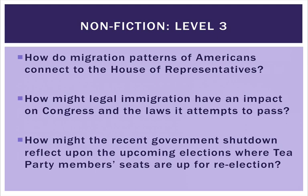In a nonfiction text, level three questions might be something like: 'How do migration patterns of Americans connect to the House of Representatives?' While that may seem a little level-two-ish, you can take it further and ask: What's causing people to migrate? What happens to the places they leave or go to? How does that matter to the balance of rural and urban populations, or to conservative and liberal voting? You might have read one fact in a textbook, but the level three question asks how we take that and apply it to something greater and more thematic.